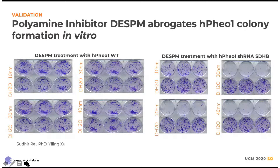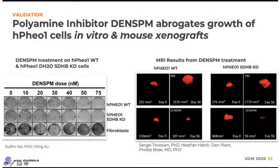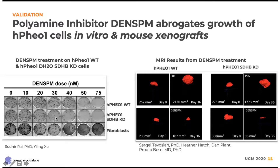Because diethylspermine is not in the clinic, but its sister polyamine inhibitor diethylnorspermine is currently in a phase two clinical trial, we decided to turn our attention to diethylnorspermine and perform the same in vitro experiment. We see that at 50 nanomolar concentration, the HVO1 wild-type cells started to die out, whereas the SDHB knockdown cells started to die out at 30 nanomolar concentration — showing a differential effect that aligns well with what LMAVEN and the Pollyomics pathway analysis had pointed out.